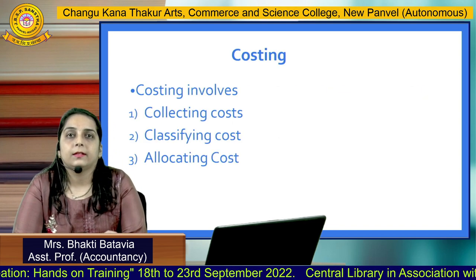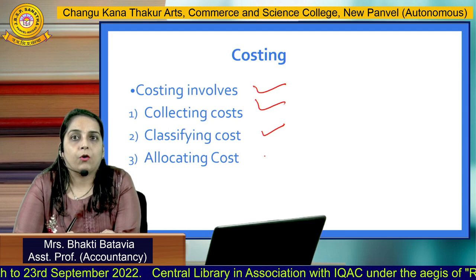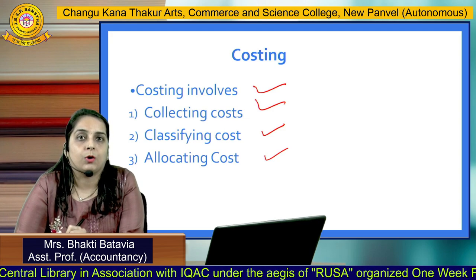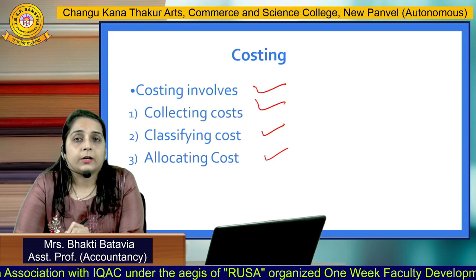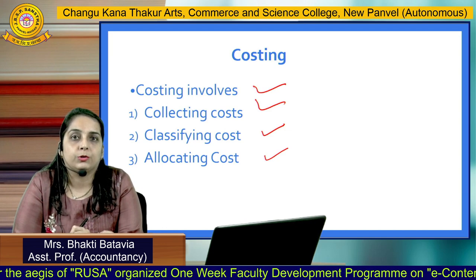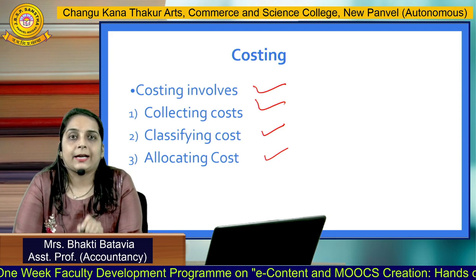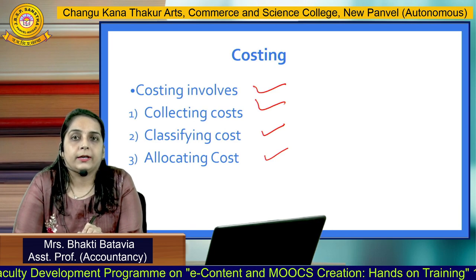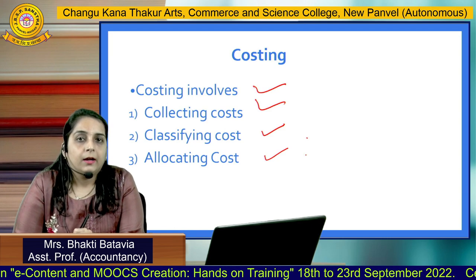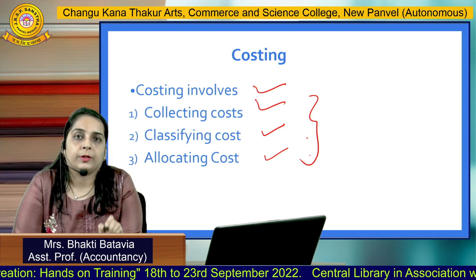Costing involves three steps: collecting cost, classifying cost, and allocating cost. First, we identify all different costs related to our production system — what materials are required, what workers are required, which process to use. We identify costs into direct and indirect elements, which we will cover in the next lecture. Then we classify and allocate the cost, making the costing process run smoothly.